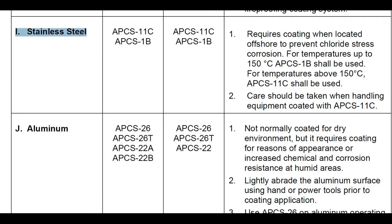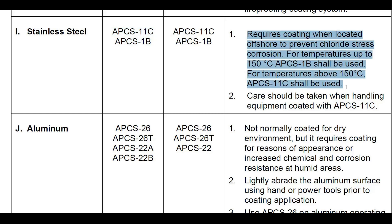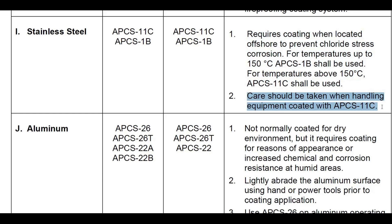For stainless steel, APCS11C and APCS1B are used for both new construction and maintenance coating. Point 1: Coating is required when located offshore to prevent chloride stress corrosion; for temperatures up to 150°C use APCS1B, and for temperatures above 150°C use APCS11C. Point 2: Care should be taken when handling equipment coated with APCS11C.